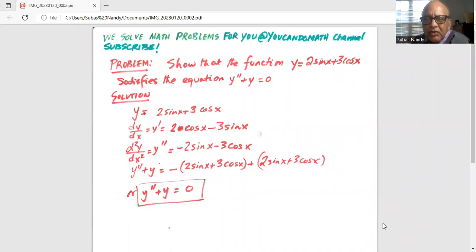Show that the function y = 2sin(x) + 3cos(x) satisfies the equation y'' + y = 0.